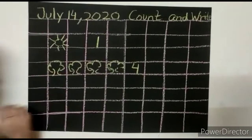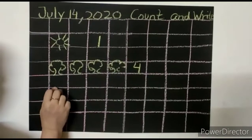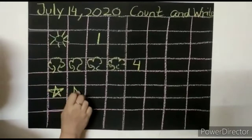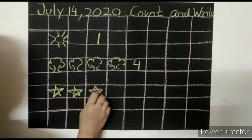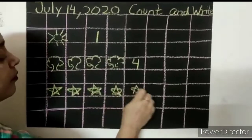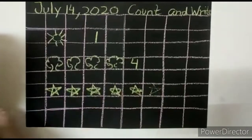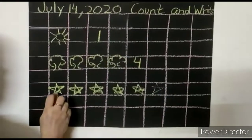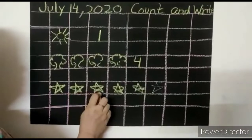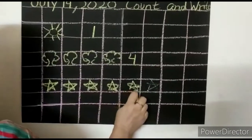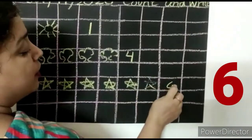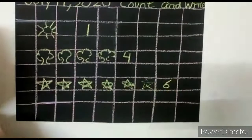Now next one is, now I draw the stars. Yes. Now count the stars. One, two, three, four, five, six. Total how many stars are there? Six.